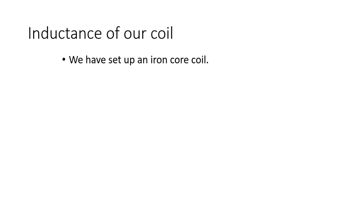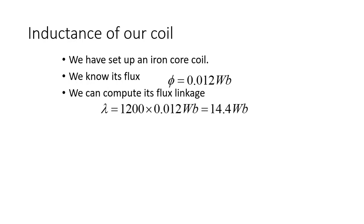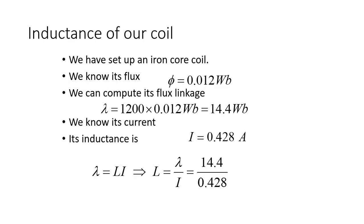We have set up an iron core coil. So we have the flux: 1.2 milliwebers. We can compute the flux linkage. Sure, 14.4 webers. We know the current: 0.428 amperes. Divide the flux linkage by the current and we get what is the inductance.